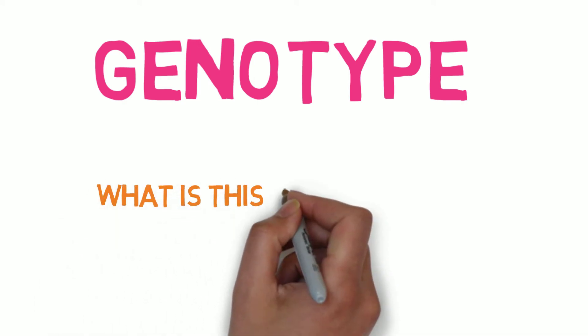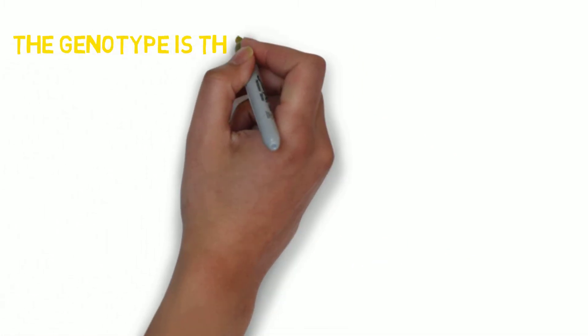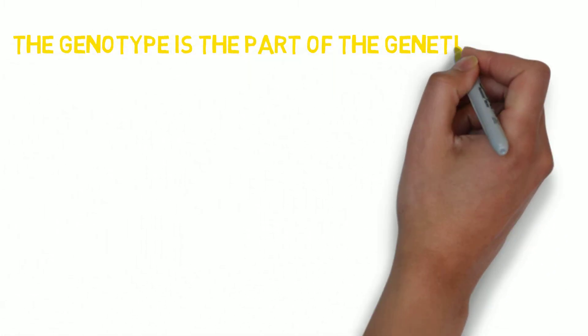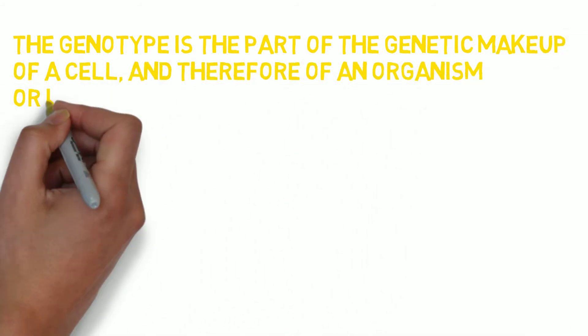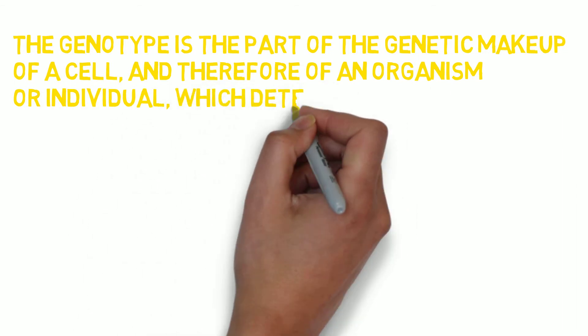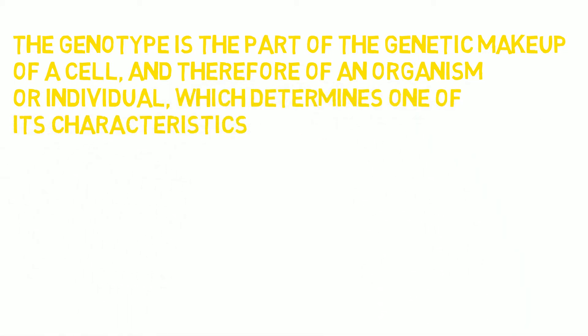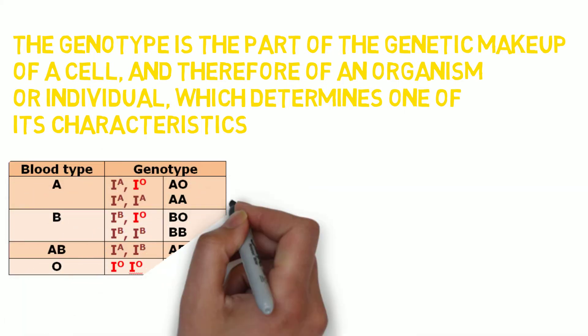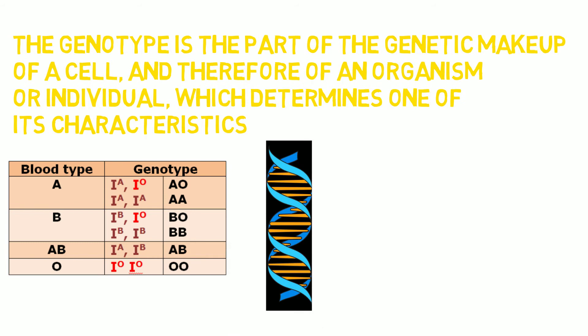Moving on next, that is genotype. What does genotype mean? It can be explained as: the genotype is the part of the genetic makeup of a cell, and therefore of an organism or individual, which determines one of its characteristics. Such as the genotype of blood groups, which are different for different blood groups. Also the genes of DNA and chromosomes.